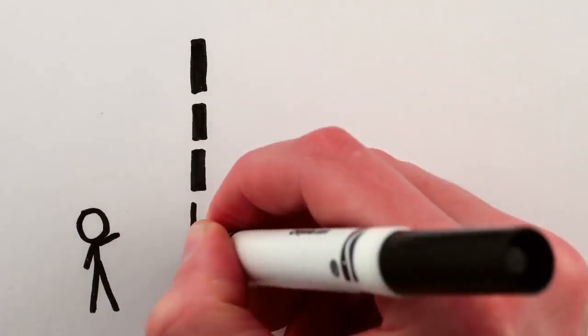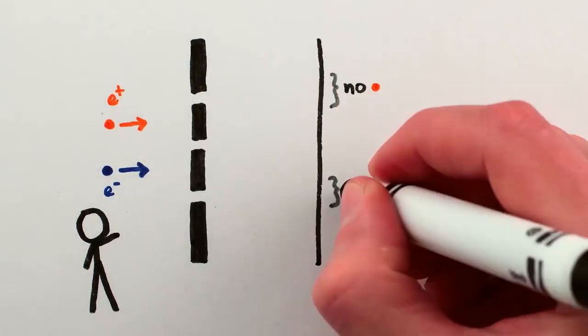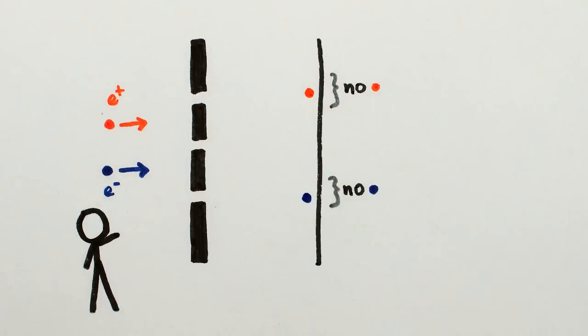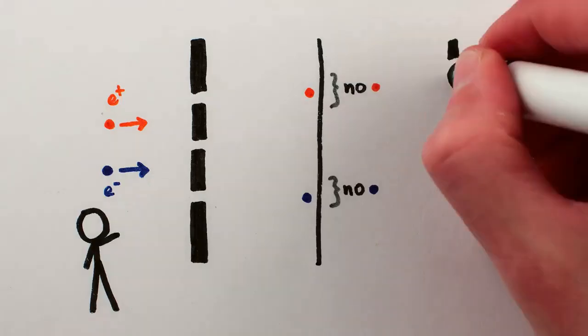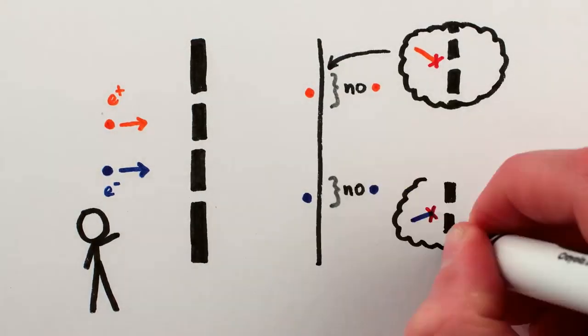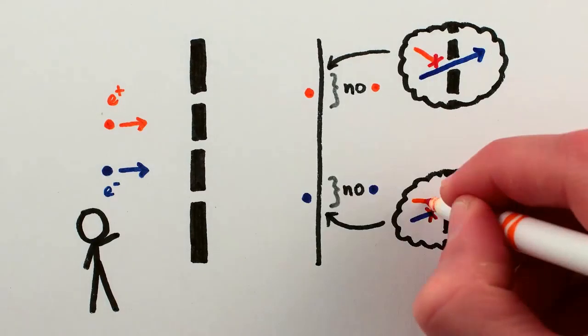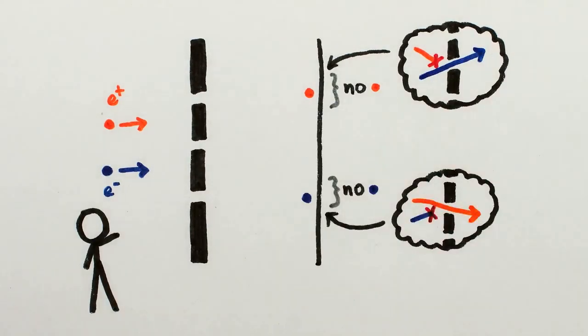This wouldn't be a problem, except that when you actually do this experiment, some of the time both cats end up in the previously cat-free spots. And we know that they can't both have gone through the middle slit because they would have annihilated each other. So each cat must have been blocked from going through the middle slit by the other cat having gone through the middle slit… simultaneously.